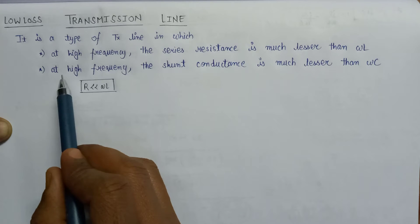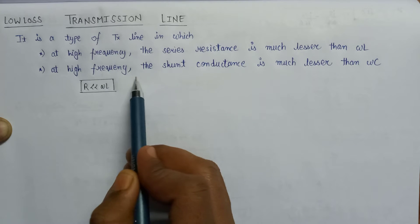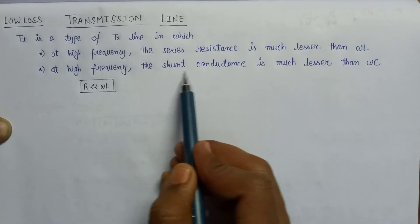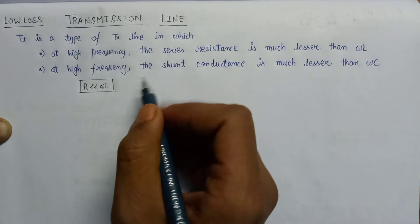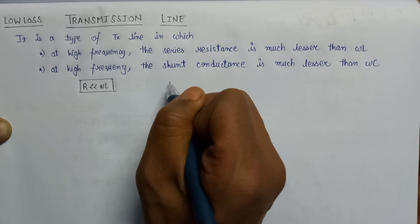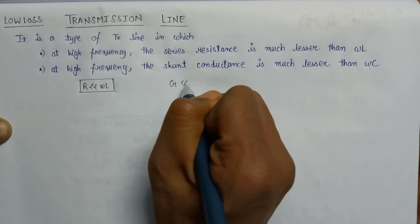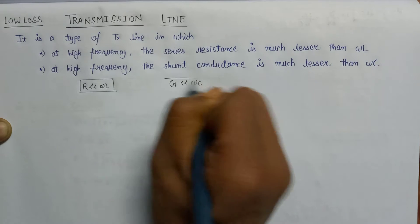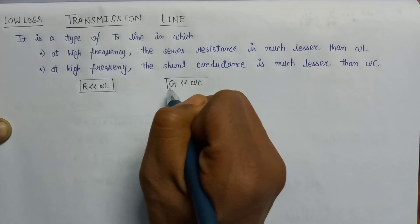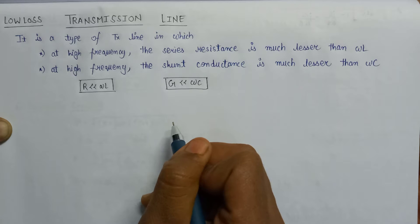Moving on to the next condition: at higher frequency the shunt conductance is much lesser than ωC. The shunt conductance is denoted by G, whose value is much lesser than ωC. This is the second condition associated with the low loss transmission line.